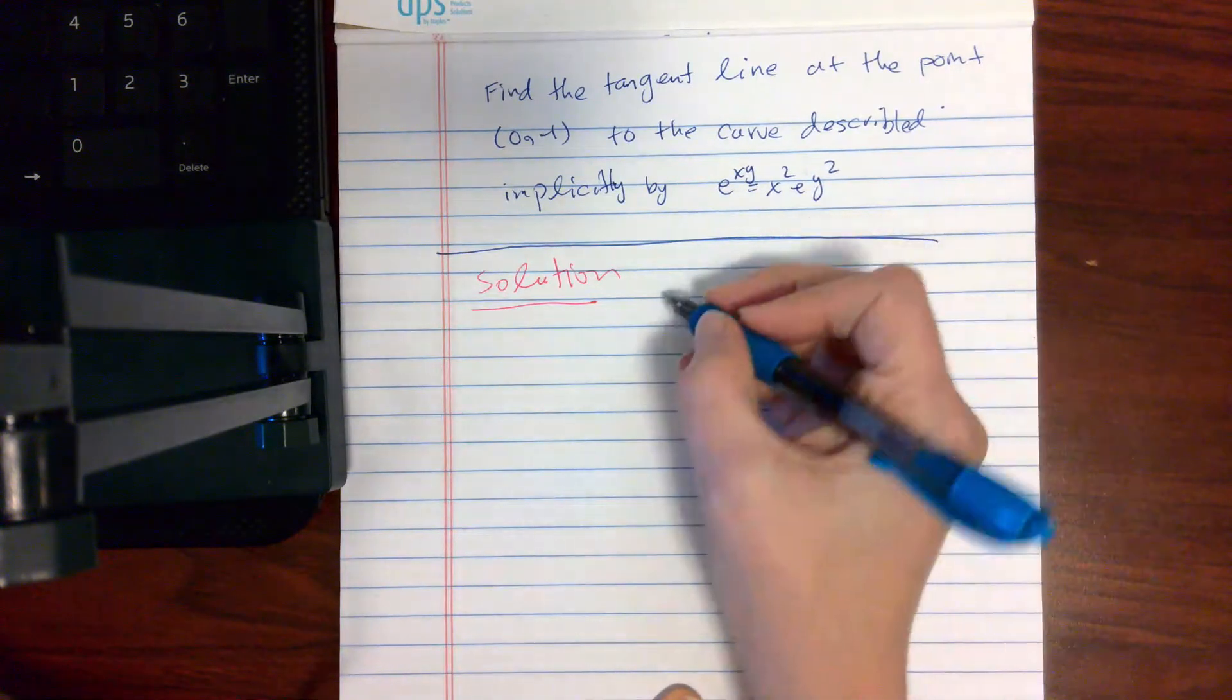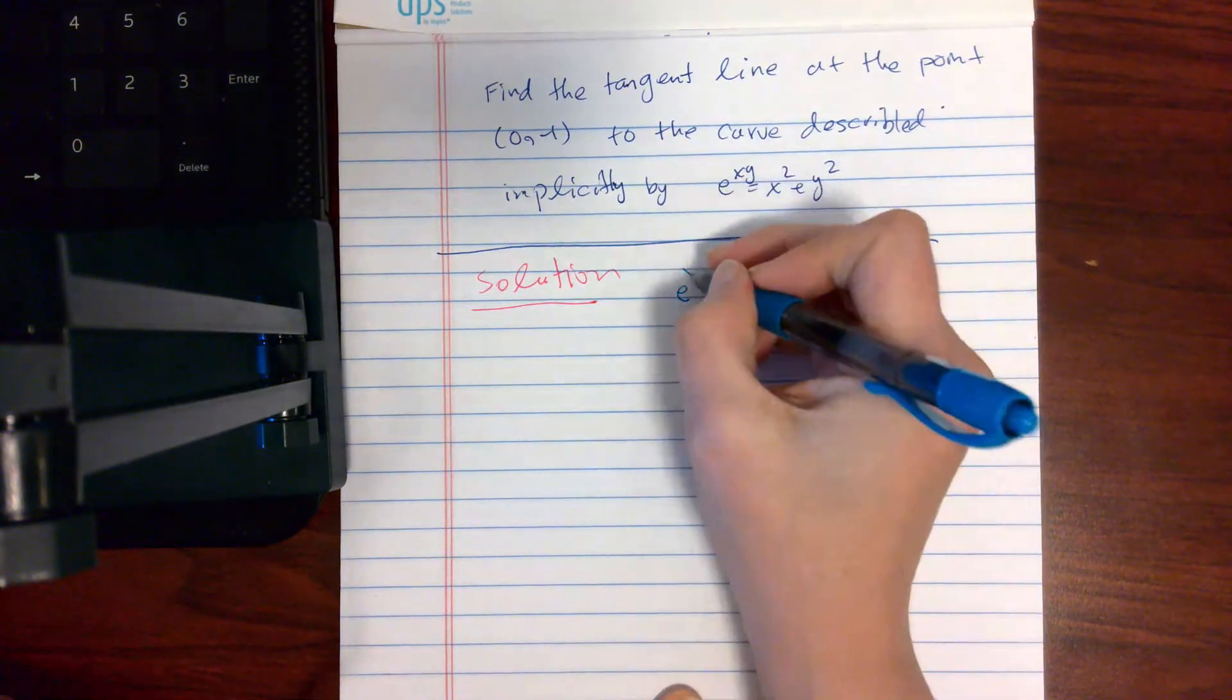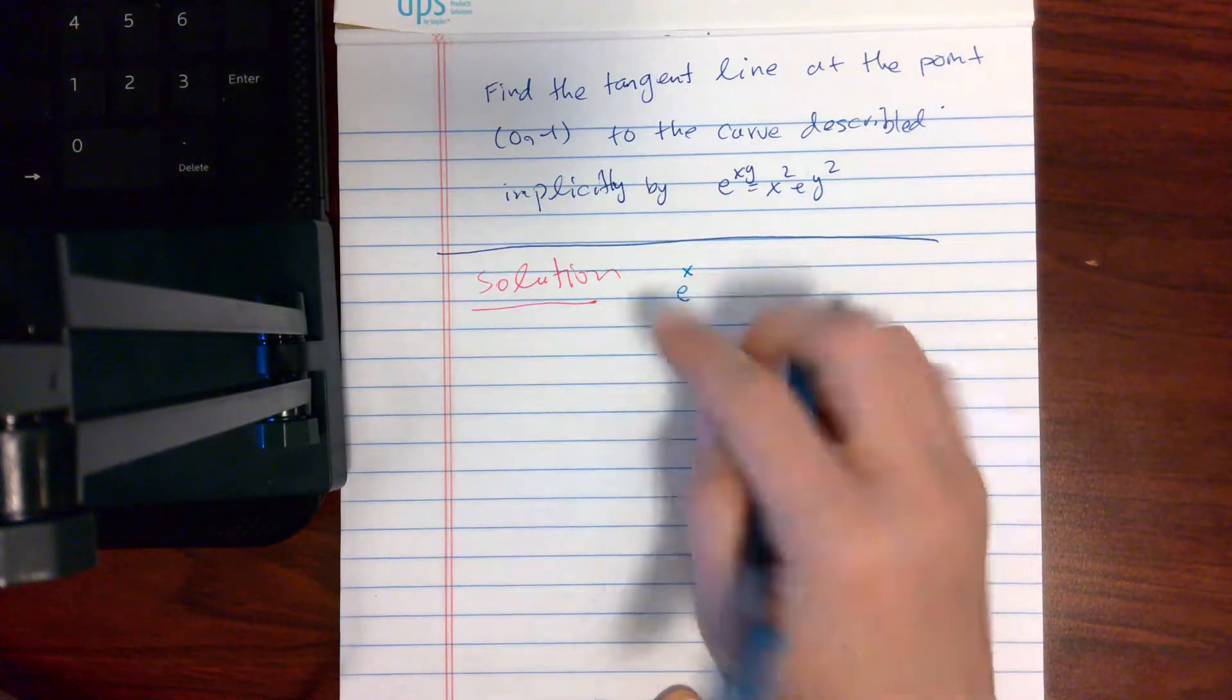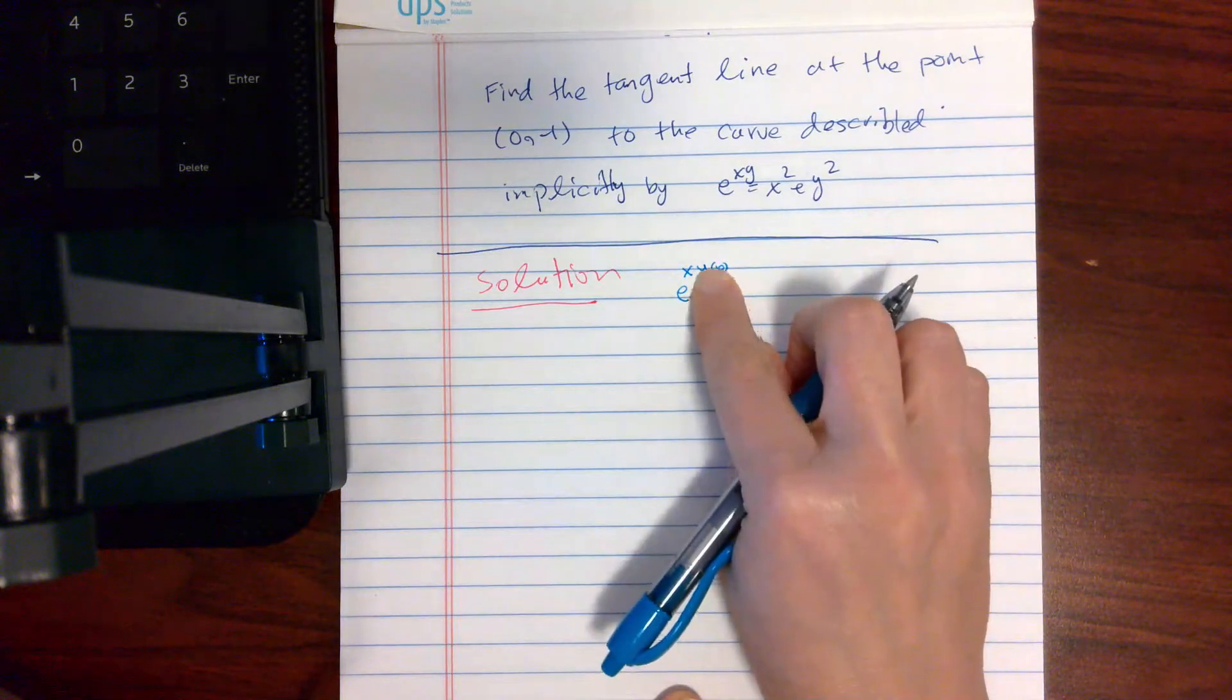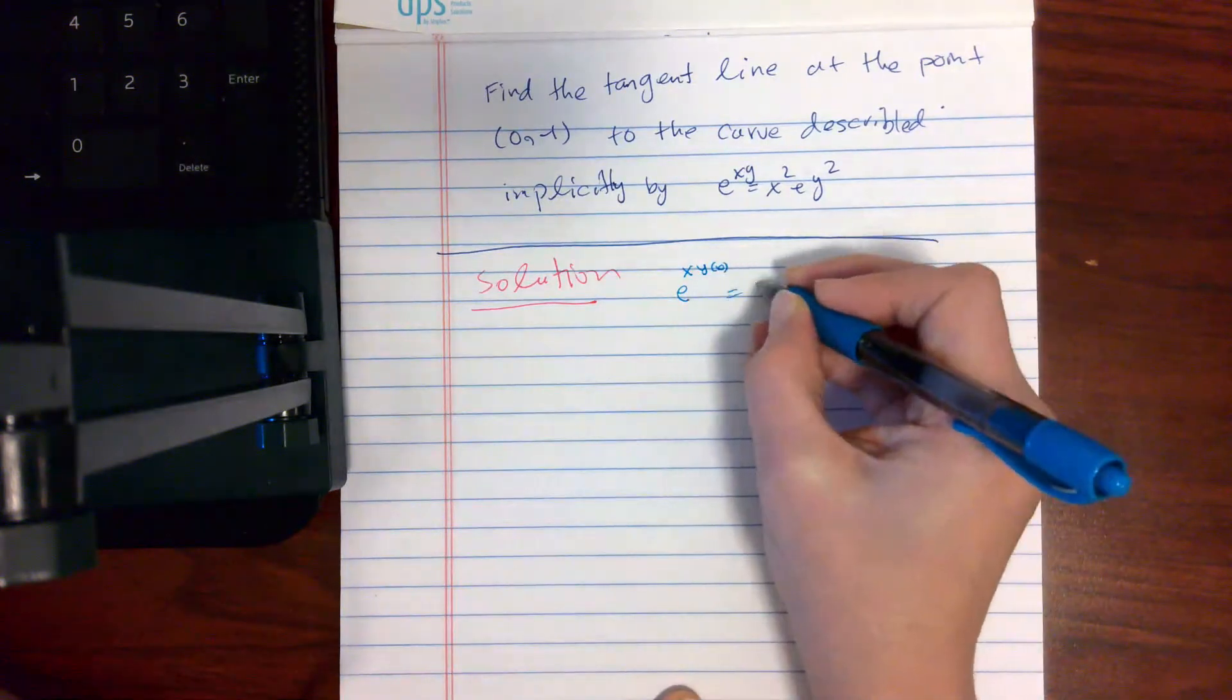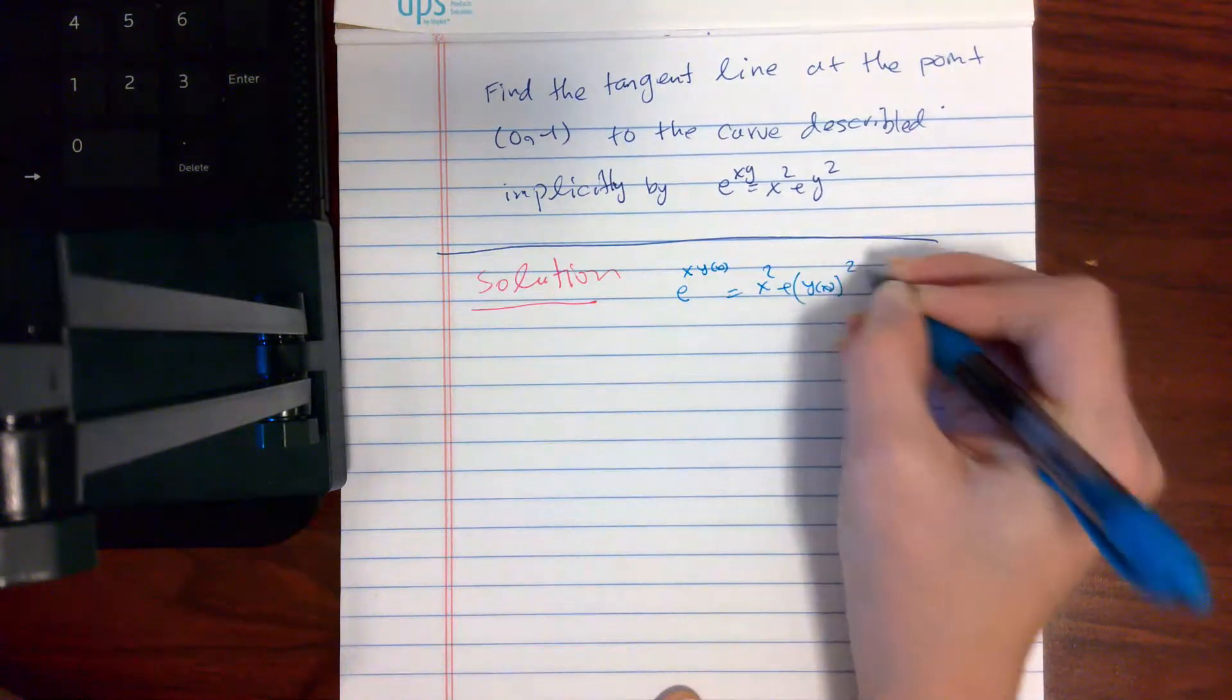Remember, when we're doing implicit differentiation and we're trying to find the derivative with respect to x, what we're assuming is that y is a function of x. That parentheses means y function of x. It's just the variable that y takes in. And so in here also, you're assuming that y is a function of x.